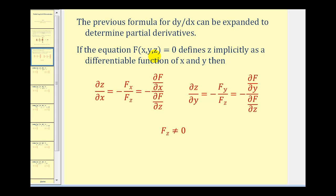If we have an equation f(x, y, z) = 0, which defines z implicitly as a differentiable function of x and y, then the partial derivative of z with respect to x equals the negative of the partial derivative of f with respect to x divided by the partial derivative of f with respect to z. Similarly, the partial derivative of z with respect to y equals the negative of the partial derivative of f with respect to y divided by the partial derivative of f with respect to z, as long as f_z does not equal zero. We won't derive this formula here, but we will look at several examples.